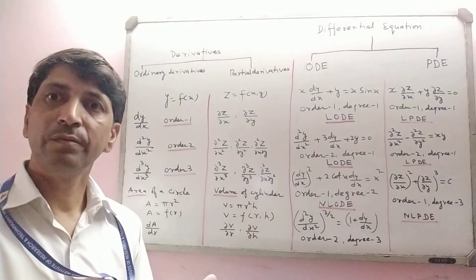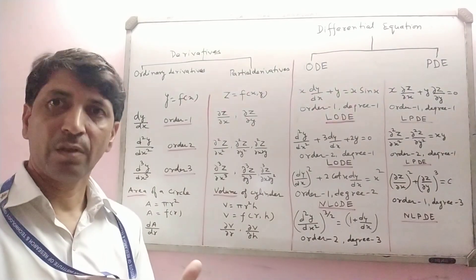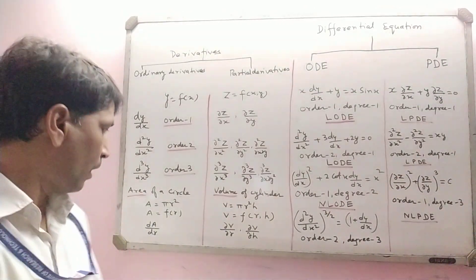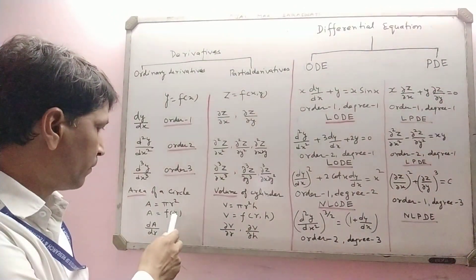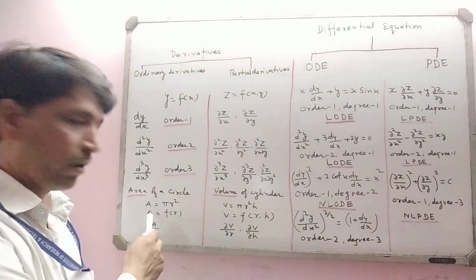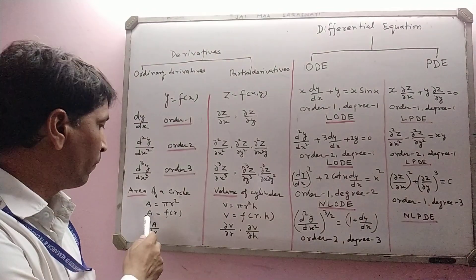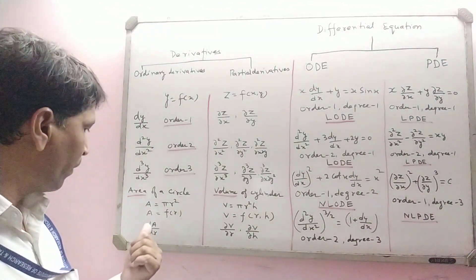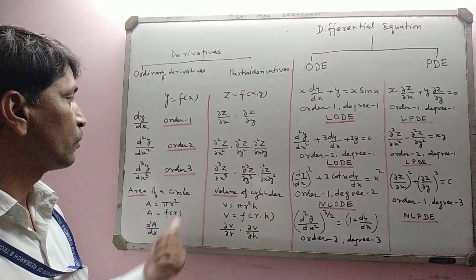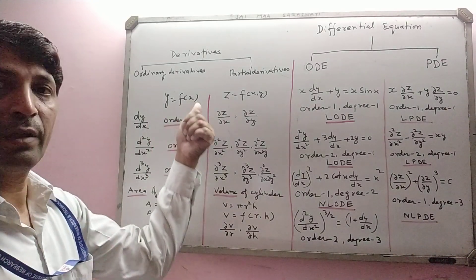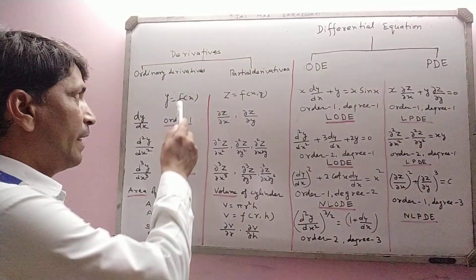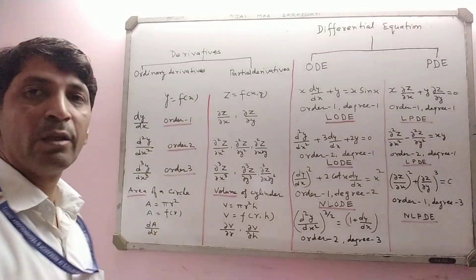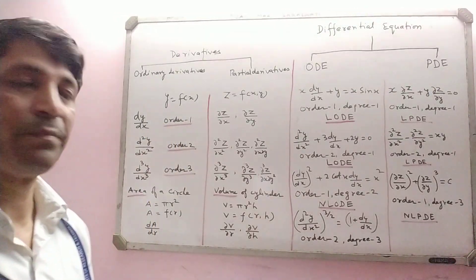Here r is called the independent variable and A is called the dependent variable. In this case we find dA/dr. So for y = f(x), x is known as the independent variable and y is known as the dependent variable.